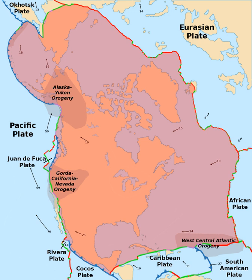The southerly boundary with the Cocos Plate to the west and the Caribbean Plate to the east is a transform fault, represented by the Swan Islands Transform Fault under the Caribbean Sea and the Motagua Fault through Guatemala. The parallel Septentrional and Enriquillo–Plantain Garden Faults, which run through the island of Hispaniola and bound the Gonâve Micro Plate, are also a part of the boundary. The rest of the southerly margin, which extends east to the Mid-Atlantic Ridge and marks the boundary between the North American Plate and the South American Plate, is vague but located near the 15-20 Fracture Zone around 16 degrees north.